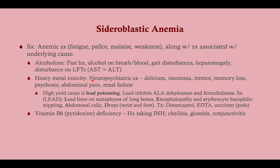Heavy metal toxicity causes neuropsychiatric symptoms. Lead is the big high-yield cause — it inhibits two enzymes on the heme synthesis pathway. Symptoms of lead poisoning can be remembered by the mnemonic LEAD: L for lead lines on x-ray at the metaphyses of long bones; E for encephalopathy and erythrocyte basophilic stippling; A for abdominal colic, which will come up in the vignette of a child with colicky abdominal pain; D for drops — wrist or foot drops. Treatment is lead chelators: dimercaprol, EDTA, and succimer. Succimer is the big one for children. The classic history is a child in an older house chewing on lead paint chips, which are sweet-tasting.